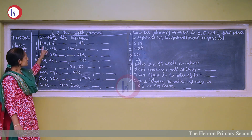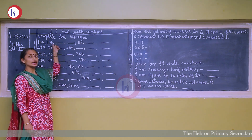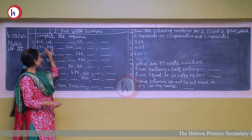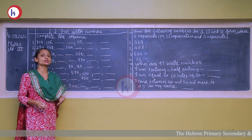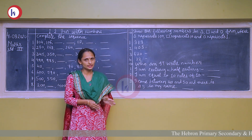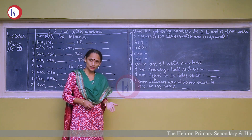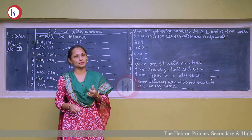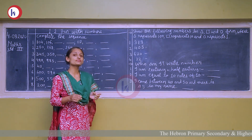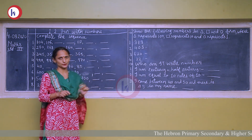In this question, we have to see whether the numbers are increasing or decreasing. If numbers are increasing, it is called forward counting, and if numbers are decreasing, it is called backward counting. In forward counting, we are adding the same number repeatedly, and in backward counting, we are subtracting the same number repeatedly.